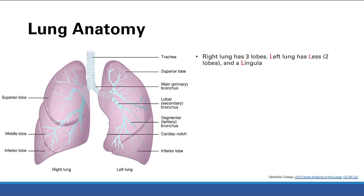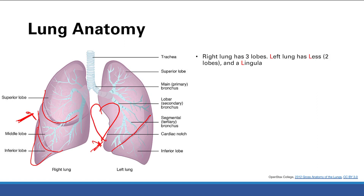Now let's talk about gross anatomy, looking at the lungs. The lungs are divided into multiple lobes. The right lung has three lobes: the superior lobe, the middle lobe, and the inferior lobe. The left side is a little different — there are only two lobes, because the heart takes up space on the left side.